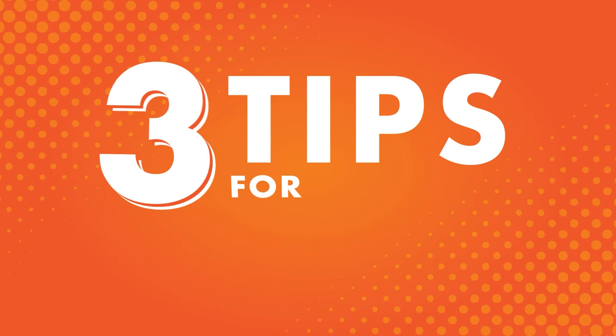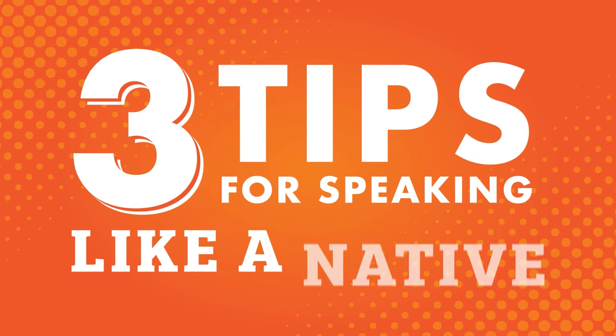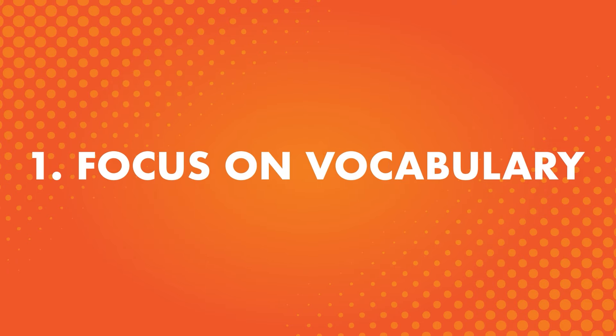Here are three tips to help you practice talking like a native speaker. Number one: focus on vocabulary. If your goal is to speak like a native, you might be really focused on speaking quickly or using as many complex grammar patterns as possible. But in our native languages, we're not always trying to speak as fast as possible, and we use complex grammar patterns when necessary, not to show off.